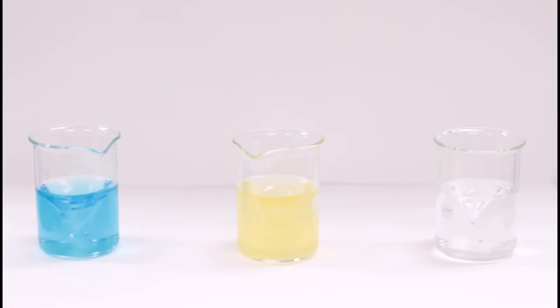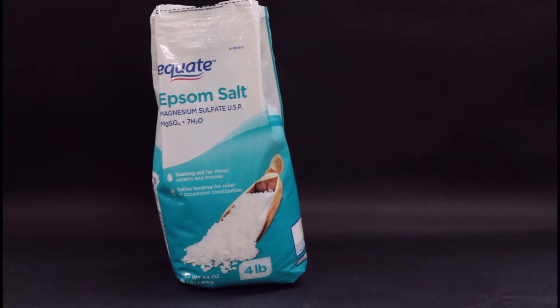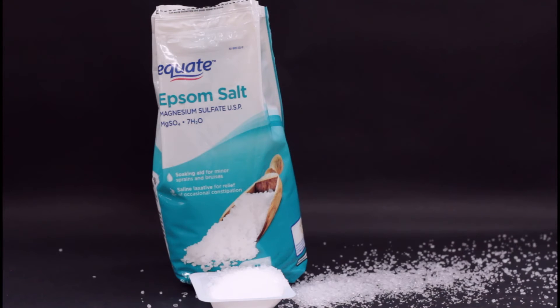For example, Epsom salts are a crystal made of magnesium and sulfate and seven water molecules to make up the crystal structure. Solid Epsom salt is actually mostly water.